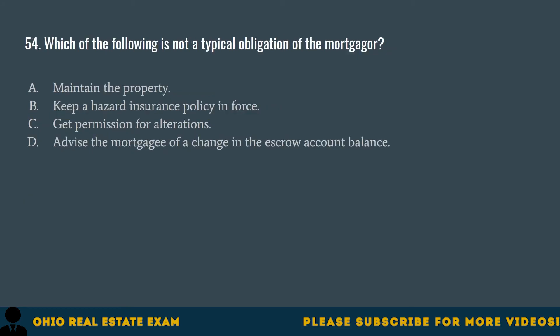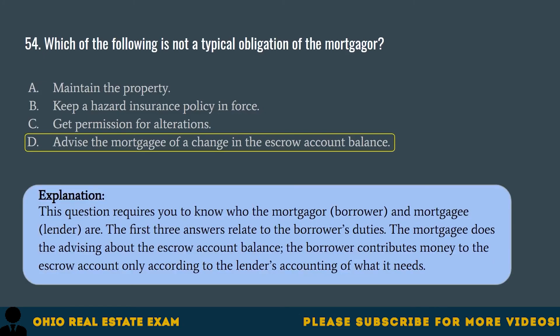Question 54. Which of the following is not a typical obligation of the mortgager? A. Maintain the property. B. Keep a hazard insurance policy in force. C. Get permission for alterations. D. Advise the mortgagee of a change in the escrow account balance. The correct answer is D. The first three answers relate to the borrower's duties. The mortgagee (lender) does the advising about the escrow account balance. The borrower contributes money to the escrow account only according to the lender's accounting of what it needs.